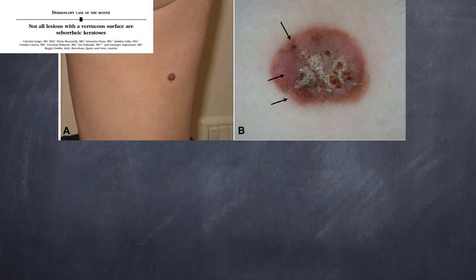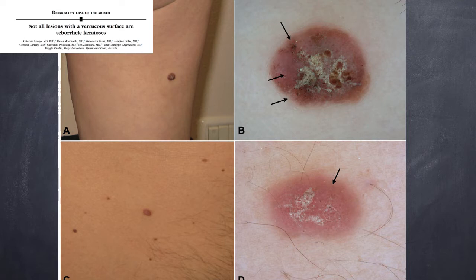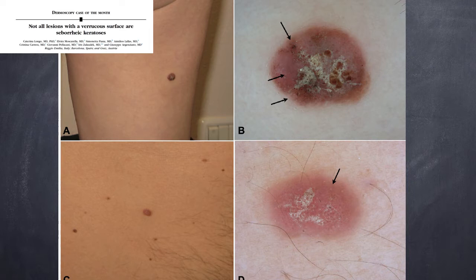We know well that seborrheic keratoses can be mimicked, but also some melanomas mimic seborrheic keratoses. In these two cases from our case report: in case A we have a verrucous surface with pinkish coloring and hyperkeratosis in the center; in case C we have clinically a pinkish papule, and dermoscopically only hyperkeratosis, pinkish background, and milia-like cysts. However, case A and B represent a verrucous melanoma, in which we recognize melanoma features because of the presence of pigmentation highlighted by the arrows.